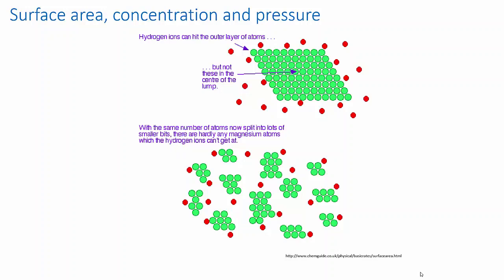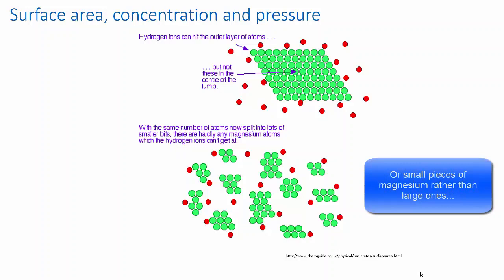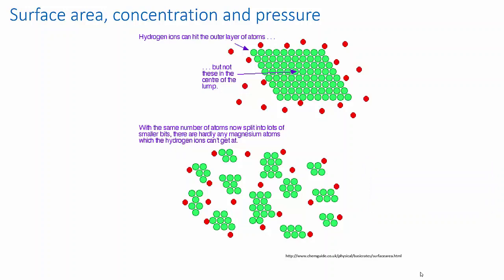But if you increase the surface area, and you could do this by dividing one of your phases more finely, for example, like having calcium carbonate powder in acid, as opposed to a single large chunk of calcium carbonate in acid, if you do this, then you increase the frequency of the collisions, because there's more surface area, there's more reactant molecules exposed, and hence you increase the reaction rate.